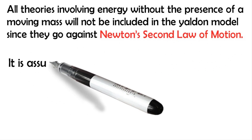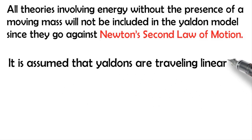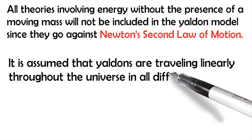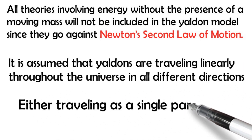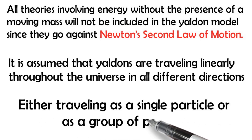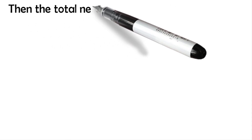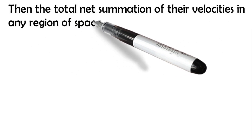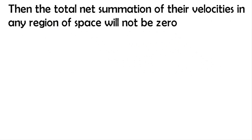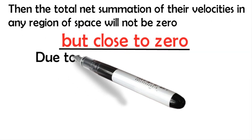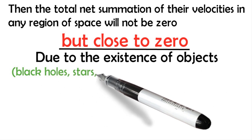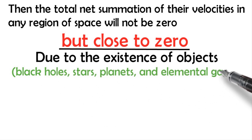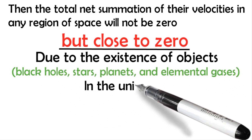It is assumed that Yaldons are traveling linearly throughout the universe in all different directions, either traveling as a single particle or as a group of particles. The total net summation of their velocities in any region of space will not be zero, but close to zero due to the existence of objects, black holes, stars, planets, and elemental gases in the universe.